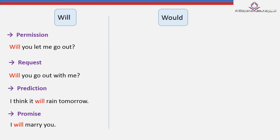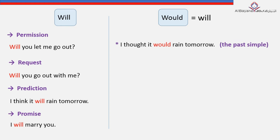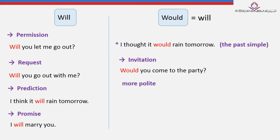The first function of 'would' is that it works as the past simple of 'will.' For instance: 'I thought it would rain tomorrow.' Secondly, 'would' expresses invitation — for example: 'Would you come to the party?' Also, 'would' is more polite than 'will.' For instance, imagine you're in a restaurant and the waiter asks: 'What would you like to eat?' — this 'would' shows politeness.